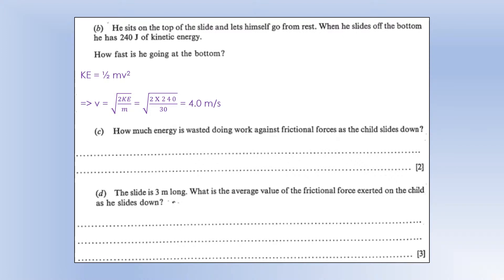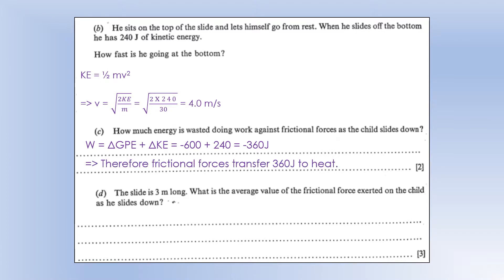How much energy is wasted doing work against frictional forces? Initially he gained 600 joules of GPE, but he only has 240 joules of kinetic energy. So the work done against him must have been 360 joules to account for the difference. It's a negative number because you're doing work against him — essentially 360 joules have been turned to heat, because that's what friction does.